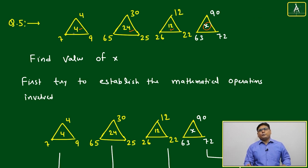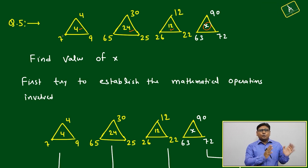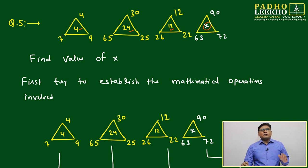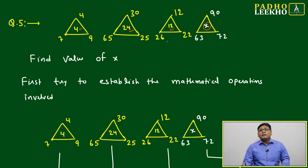There's some relation between the periphery numbers and center number: 4, 7, 9 relates to 4; 30, 65, 25 to 24; 12, 26, 22 to 12; and 90, 63, 72 relates to x. We need to find that pattern or mathematical relation.